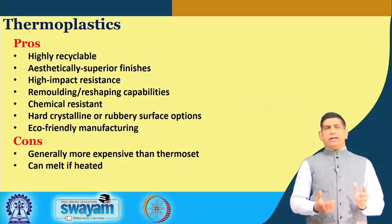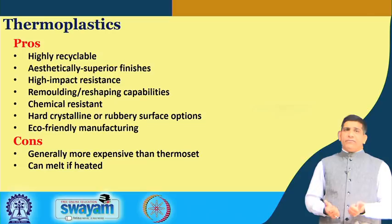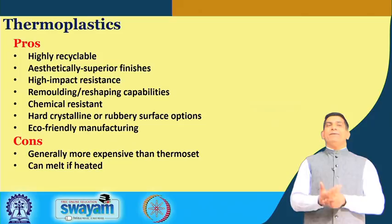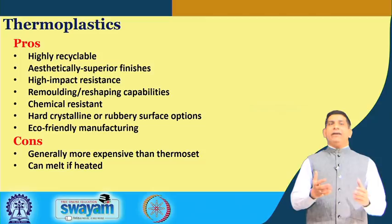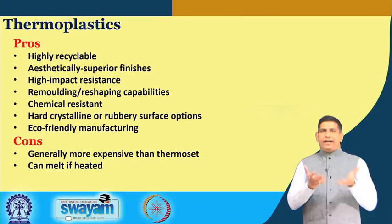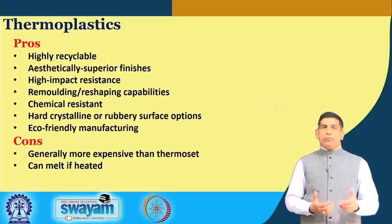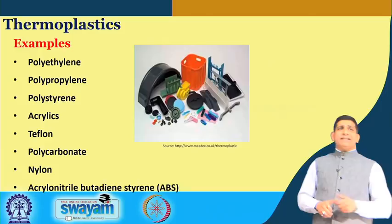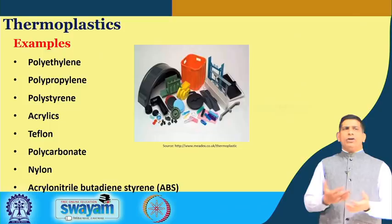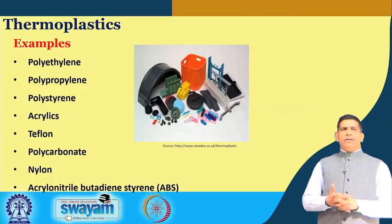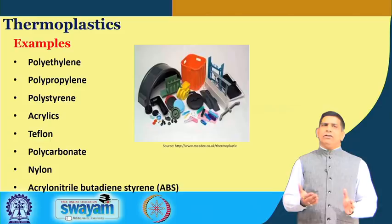Thermoplastics are eco-friendly in manufacturing because they can be recycled much more easily. The drawbacks: they are more expensive than thermosets because of the many options they offer, and they can melt if heated. So they cannot be used in a scenario where the material could potentially melt while in use. Examples of thermoplastics include polyethylene, polypropylene, polystyrene, and acrylonitrile butadiene styrene (ABS) — these are all thermoplastic materials.